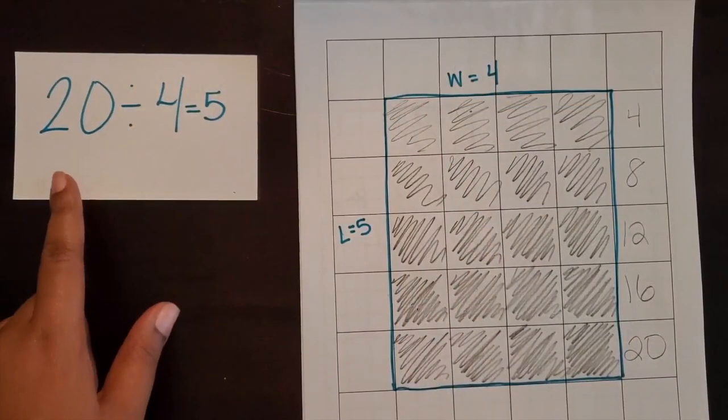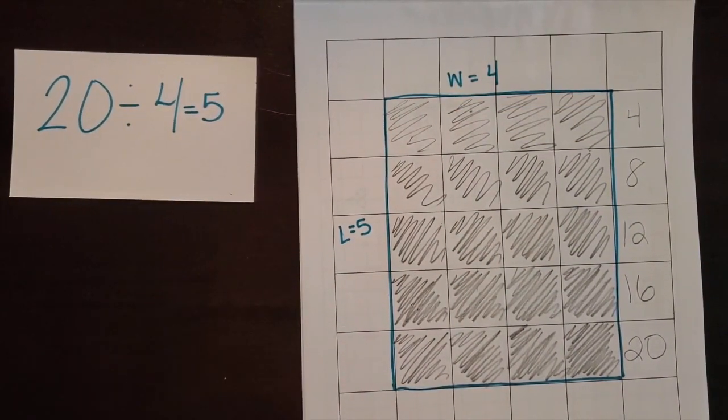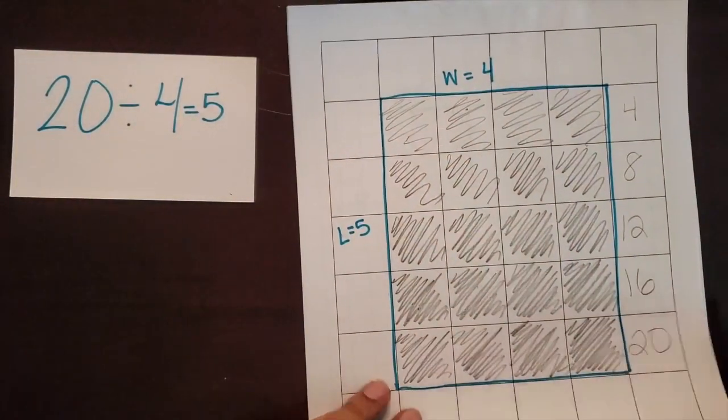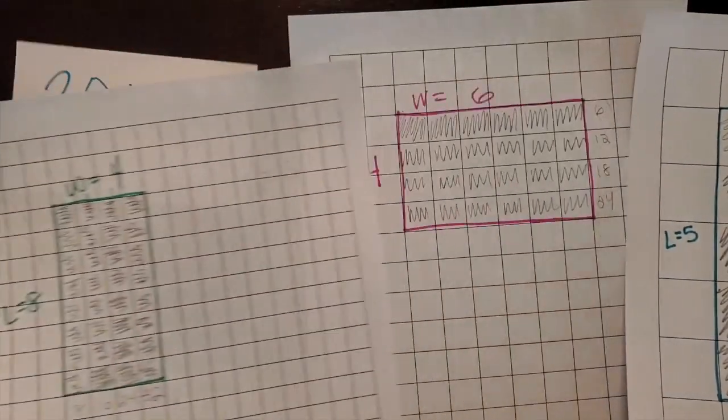Today we divided a two-digit number by a one-digit number using a quick picture of a model that represents area.